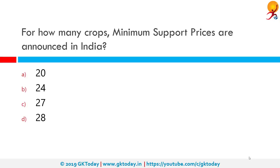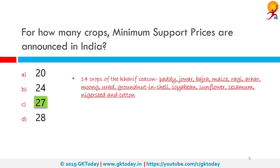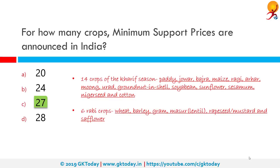For how many crops are minimum support prices announced in India? The correct answer is 27. MSPs were announced by the Government of India for the first time in 1966-67 for wheat during the Green Revolution. Since then, MSP has been expanded to many crops. The current lot of crops are 14 Kharif crops, 6 Rabi crops and 2 other commercial crops.